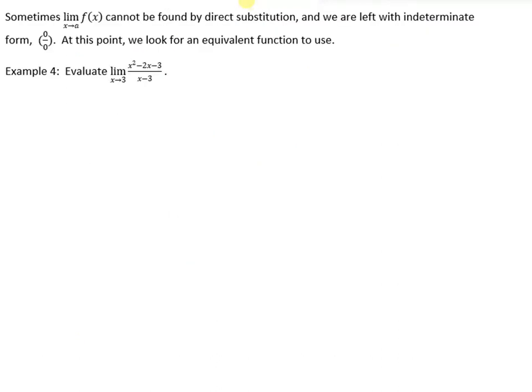Now, sometimes the limit cannot be found by direct substitution. So what this is going to look like is if you substitute the limit, like the limit as x approaches 3 in this case right here. What's going to happen is we're going to find that (3² - 2x - 3)/(3 - 3). We're actually going to get 0/0. And what 0/0 is, is indeterminate form. At this point, we have to look at an equivalent function to use.